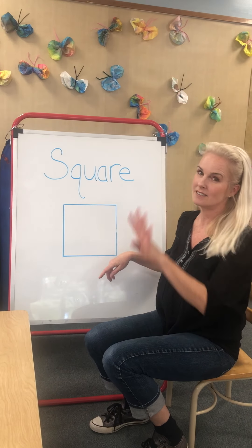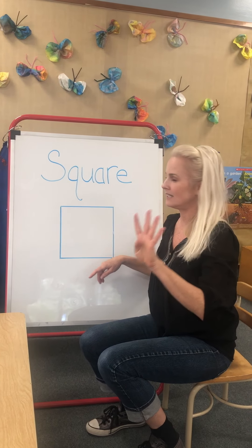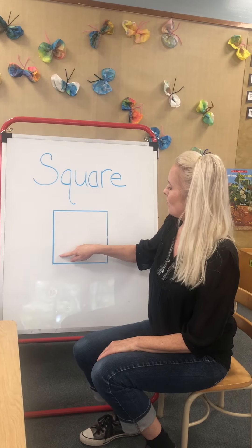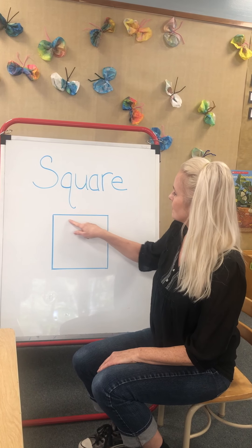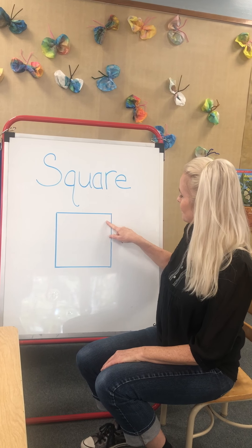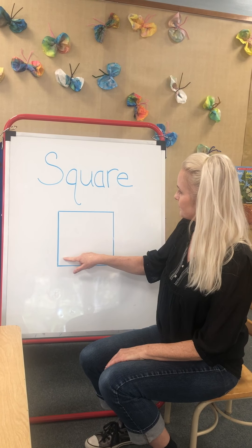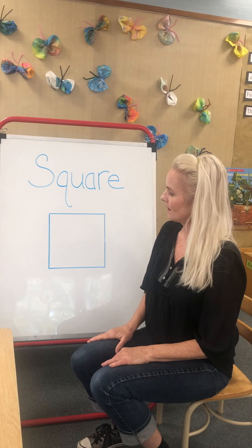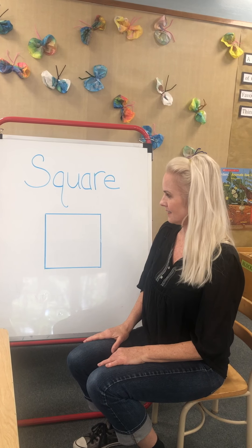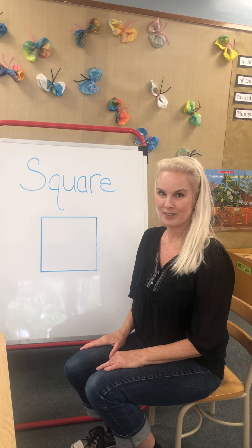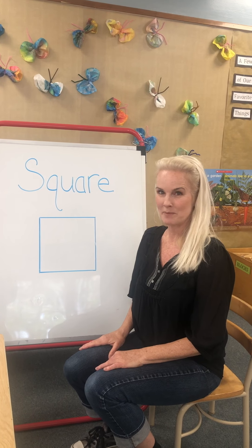A square has four sides. One, two, three, four. And I've got a song for this shape.